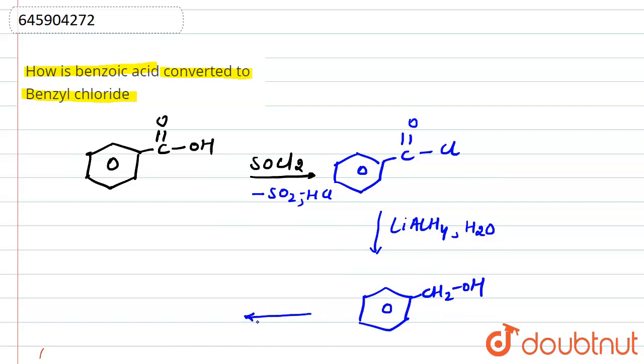And after that we have to convert this benzyl alcohol to benzyl chloride. And for that we can use a reagent ZnCl2 and HCl. ZnCl2 and HCl, so in that condition this is called Lucas reagent. This OH will be replaced by chlorine. So we can see the structure, this one.